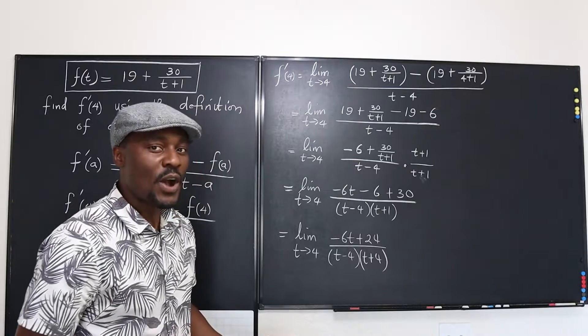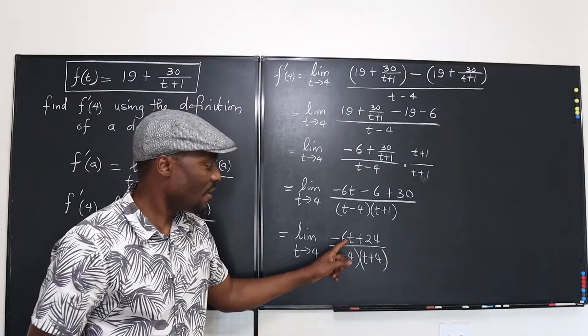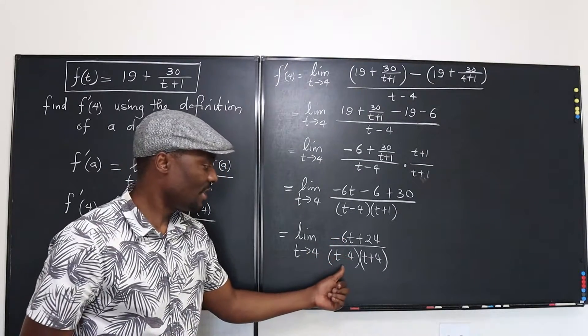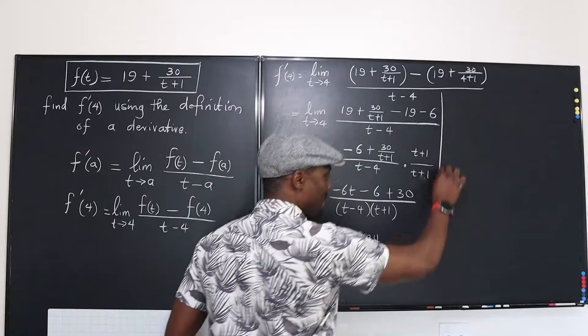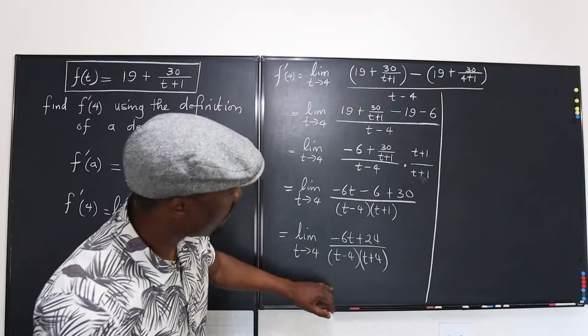So now I can clearly see that if I take out negative 6, it's going to give me t minus 4. You see that? So I'm going to go over here and I'll just finish the work.